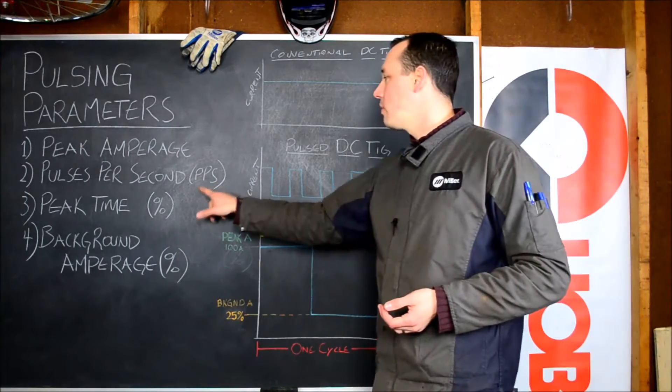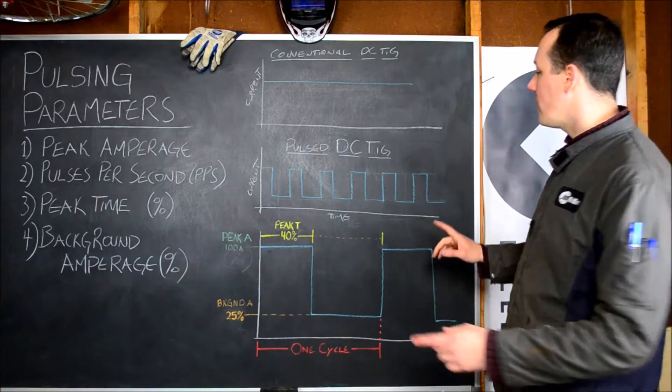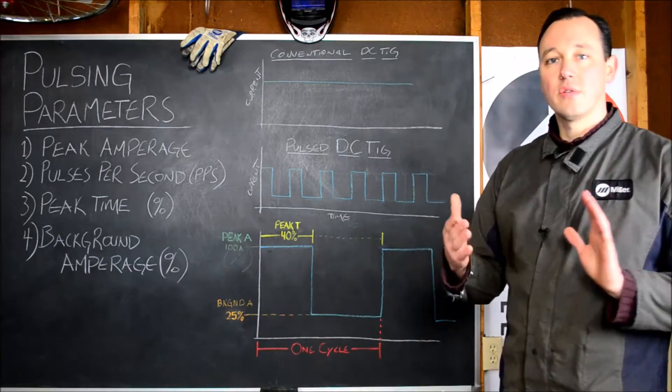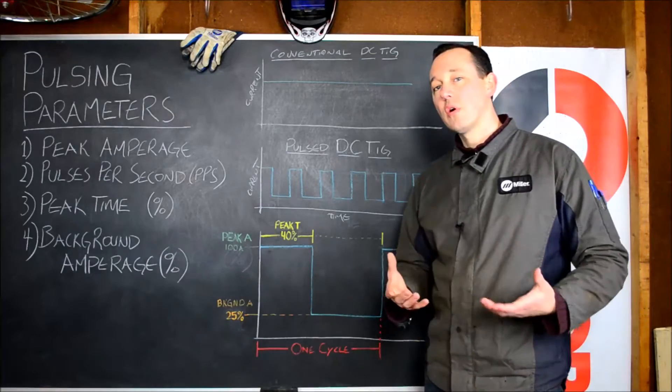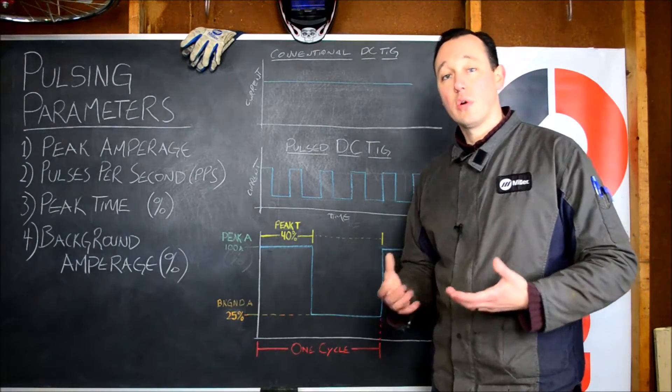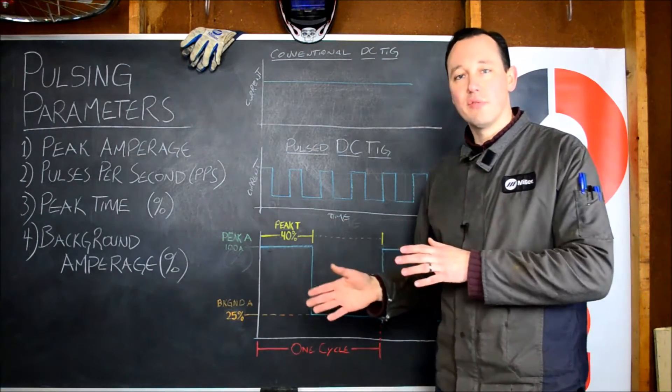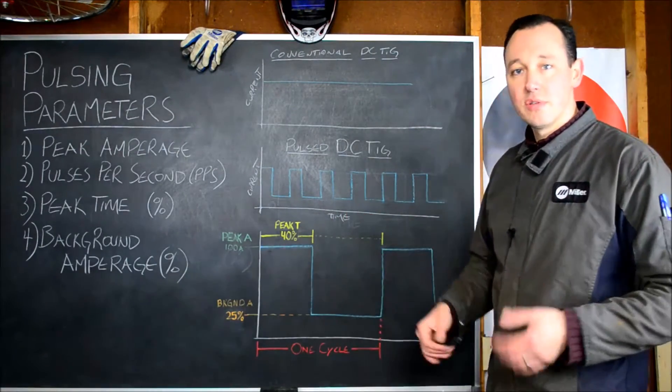Number two is pulses per second. Pulses per second is nothing more than how many times this cycle repeats itself within a single second. It's the same thing as hertz, but a lot of times people don't use hertz when they're talking about pulsing because it leads to confusion between that and AC output frequency, but they're interchangeable.